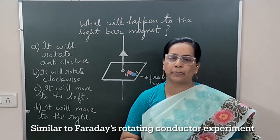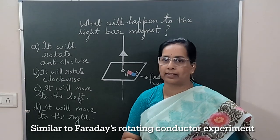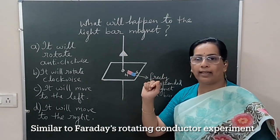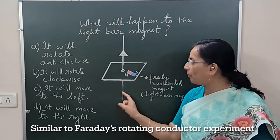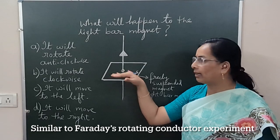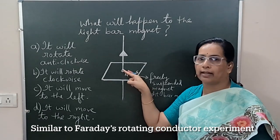What will happen to a freely suspended bar magnet which is placed near a straight current carrying conductor? In this diagram, this is that straight current carrying conductor in which electric current is flowing from bottom to top. In a plane perpendicular to this current carrying conductor, there is a freely suspended bar magnet with its north pole facing towards the conductor.